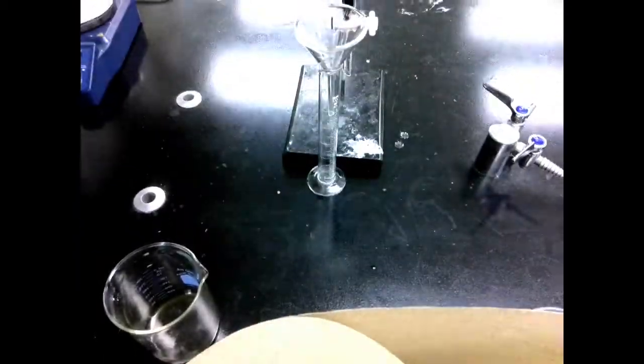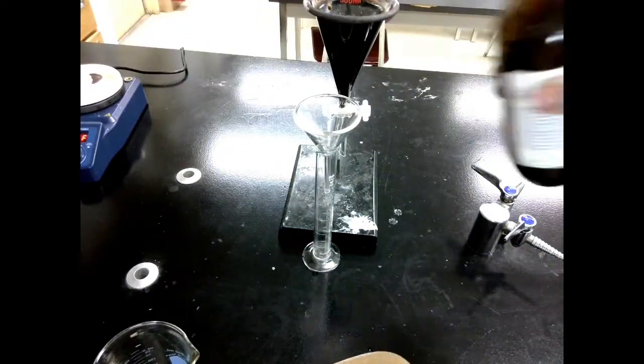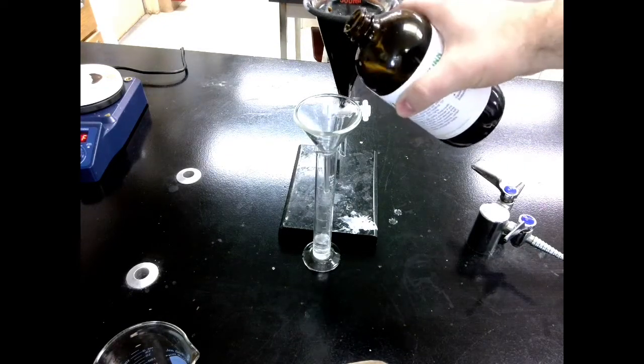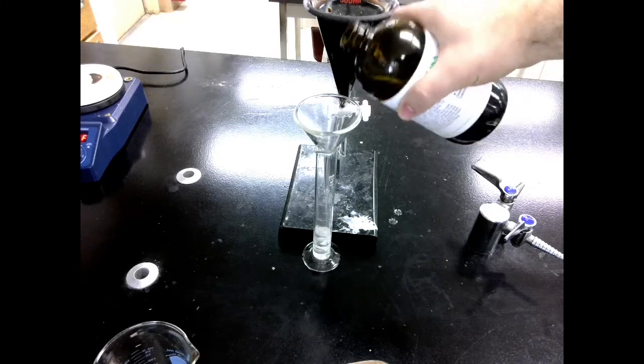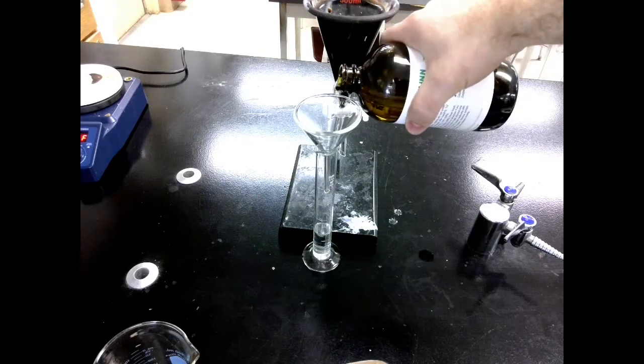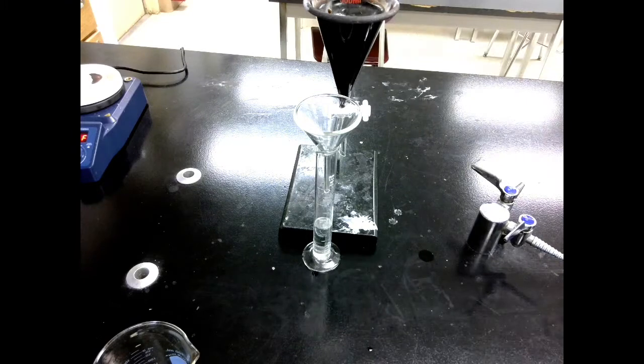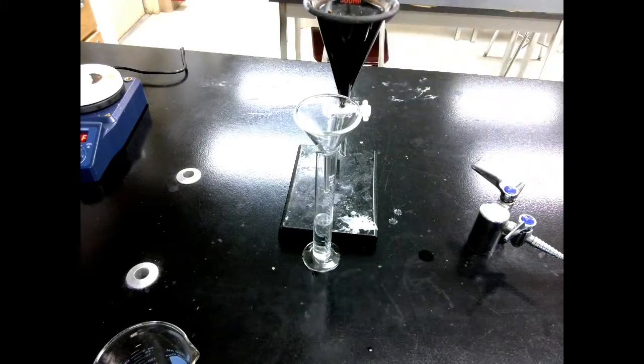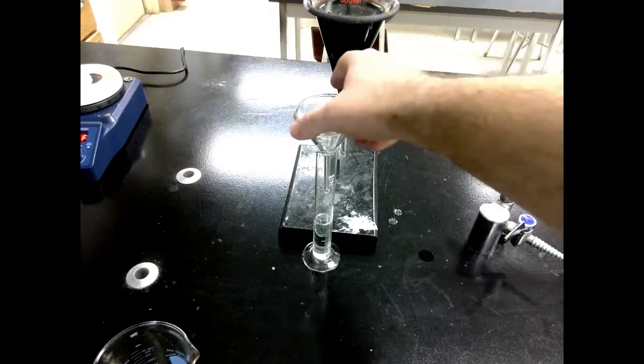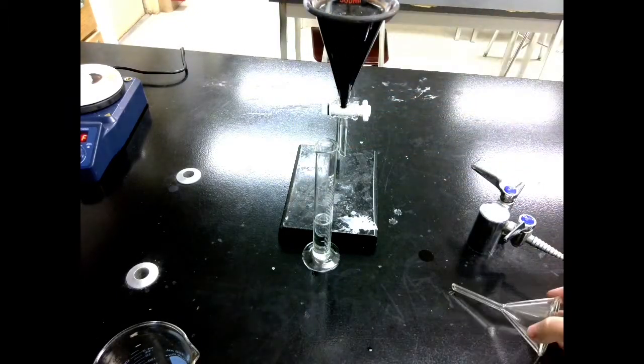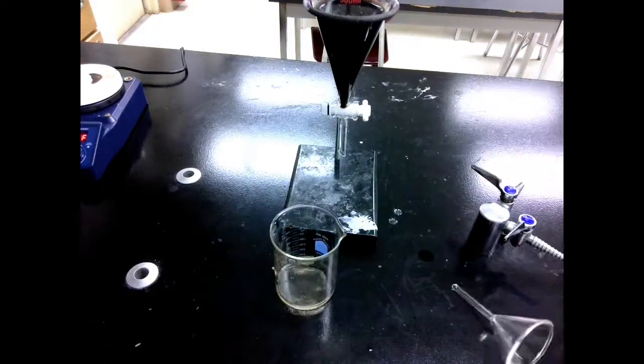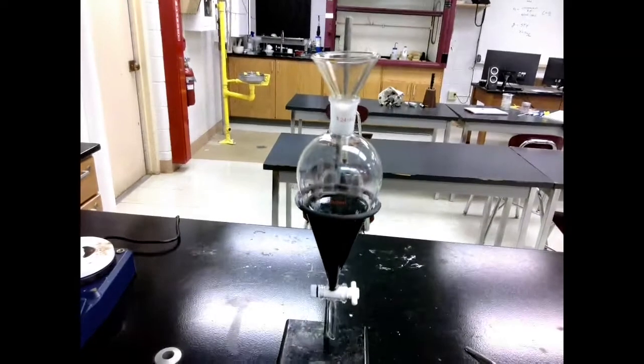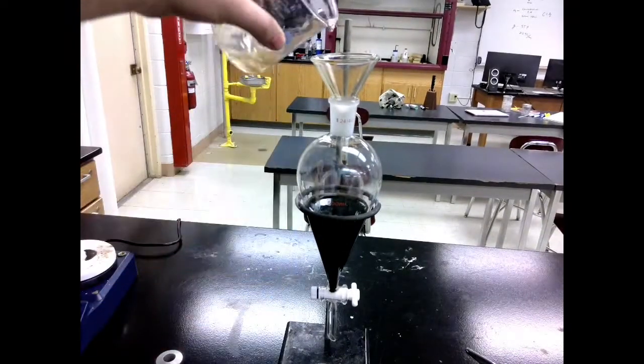Next, we're going to add 25 milliliters of dichloromethane. Use a glass funnel for this because dichloromethane tends to stick to glass, so it won't pour nicely. So it's okay if you get a little bit over. Once you've got your dichloromethane, pour it back into that same beaker that had the tea in it, just to try and get as much out as we can. Then we're going to pour that into the separatory funnel and we'll watch as the layers separate.